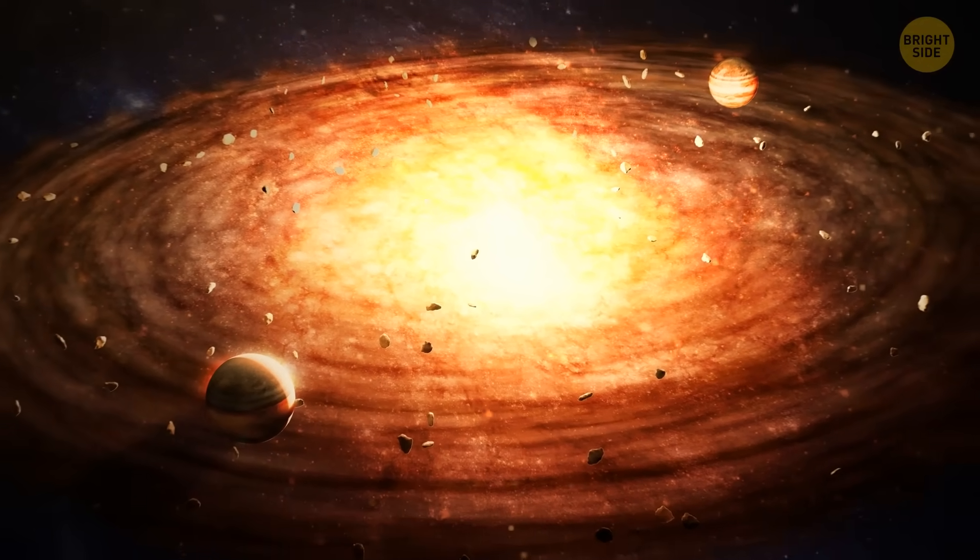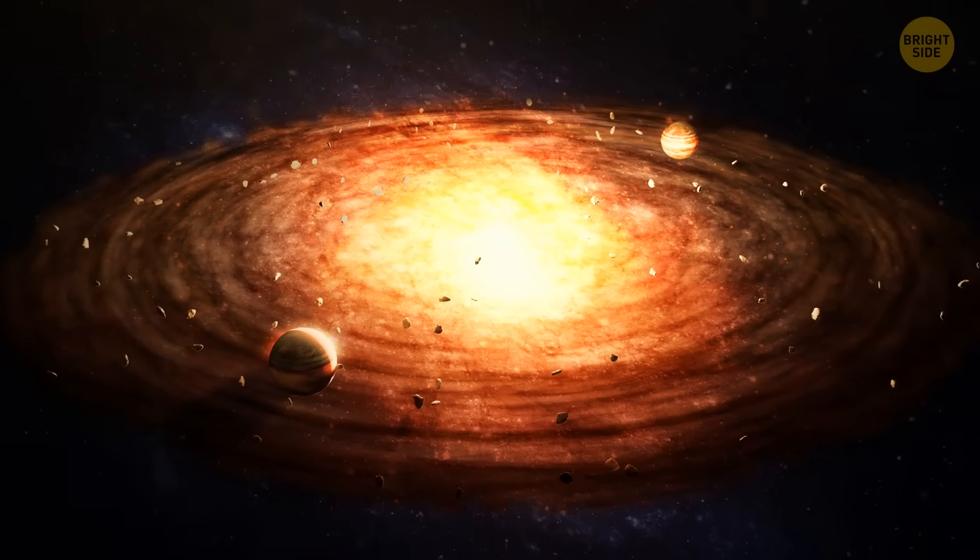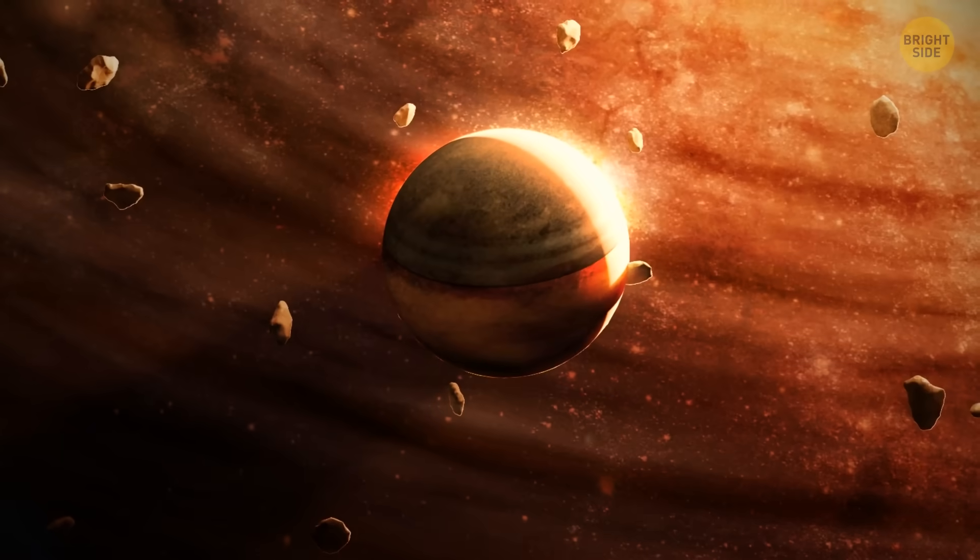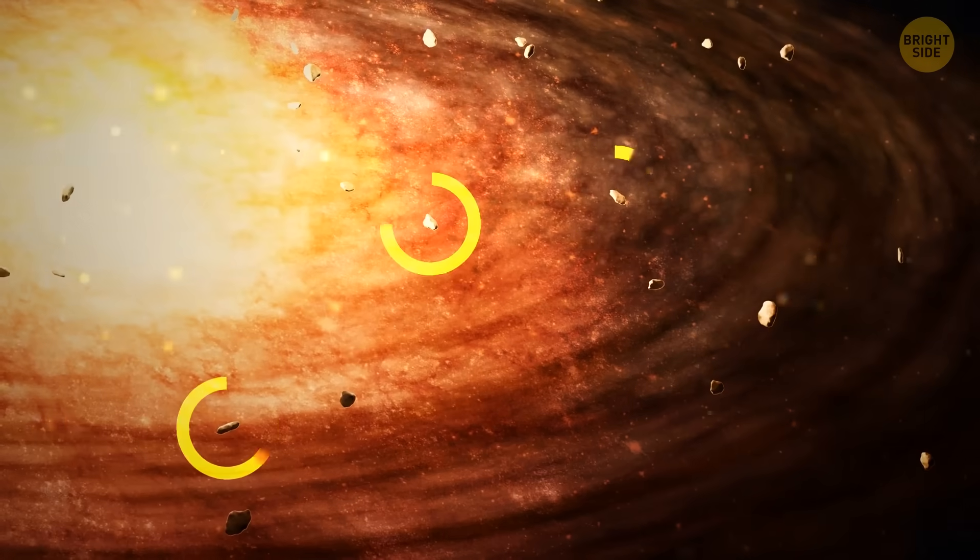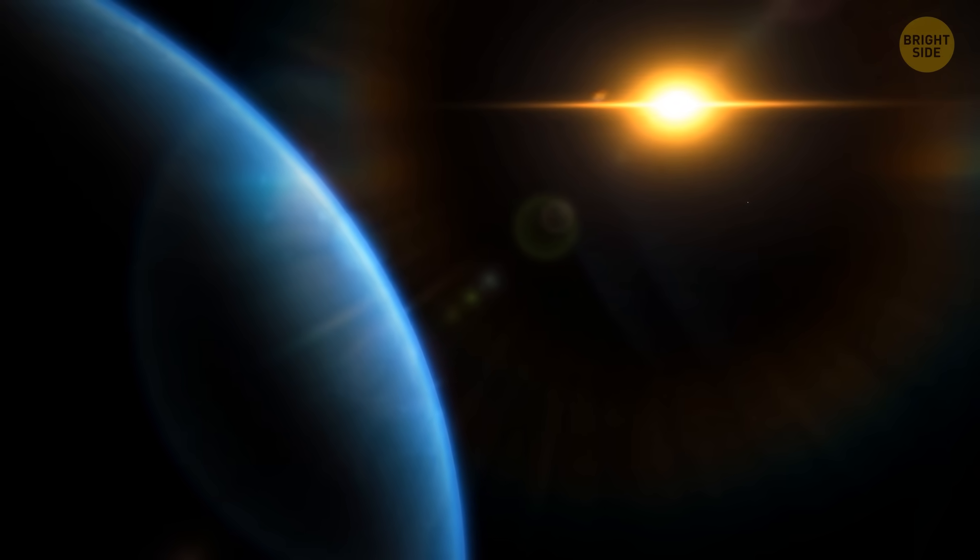Later, what's left of the disk will come together to form the elements of the planetary system. Planets, dwarf planets, comets, asteroids. You name it.